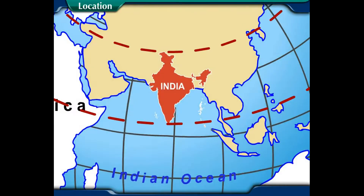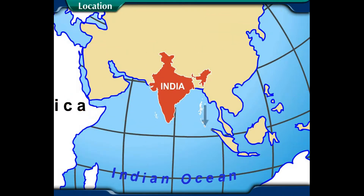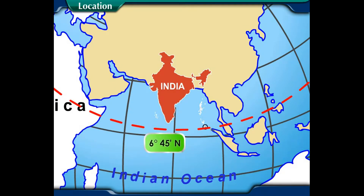India's latitudinal extent is from 8 degrees 4 minutes 28 seconds north to 37 degrees 6 minutes 53 seconds north, which makes it 29 degrees 2 minutes 35 seconds. However, the southernmost tip of India is located at 6 degrees 45 minutes north latitude.